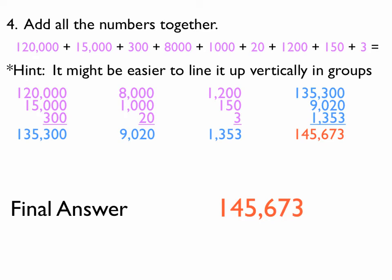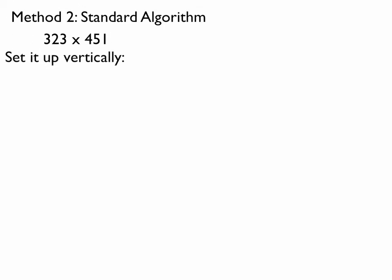Now, that's using distributive property, but most everyone knows how to do it with the standard algorithm. So, let's go ahead and do that now. So, again, I have 323 times 451. Set it up vertically, just like we've been doing on previous videos.